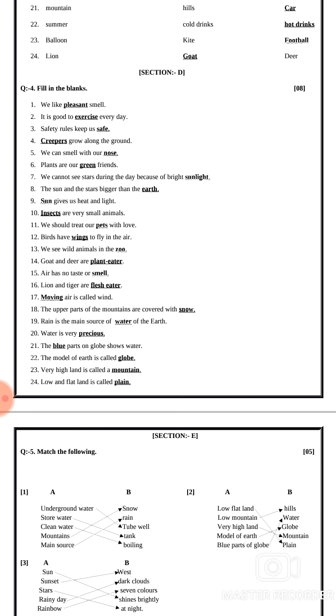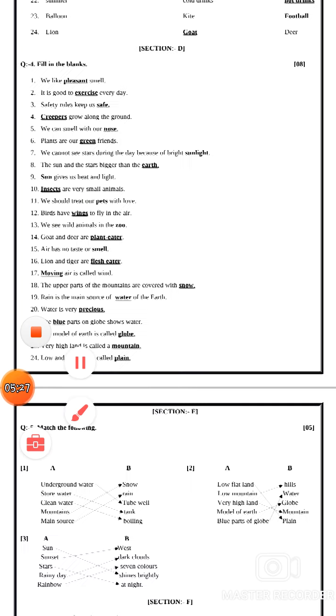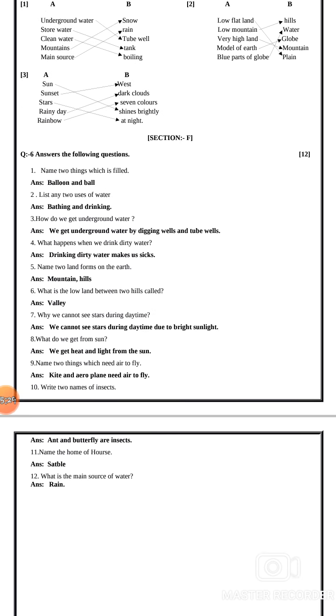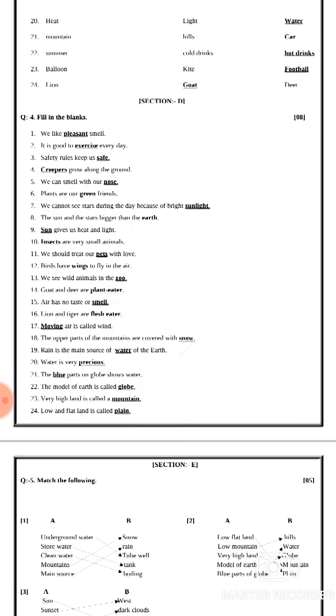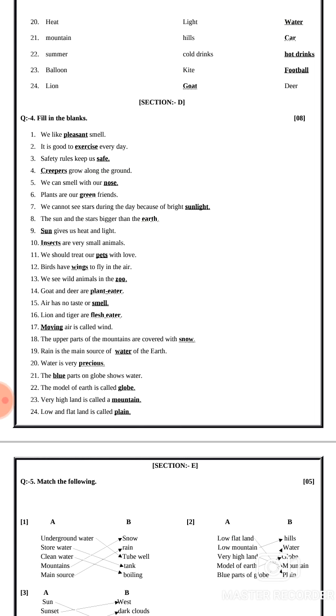Twenty-four number: low and flat land is called plain, P-L-A-I-N. So dear students, here we have completed question number four. In the next video, we are going to check out question number five and six. Till then, you just make it ready, this question number four, filling the blanks. If possible, write it down one time in your notebook and try to make it ready. Thank you.